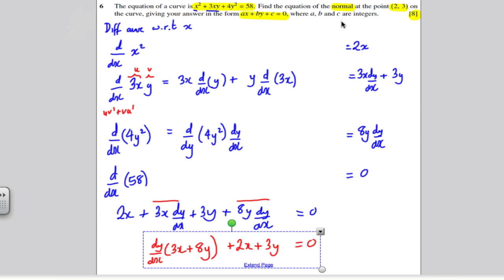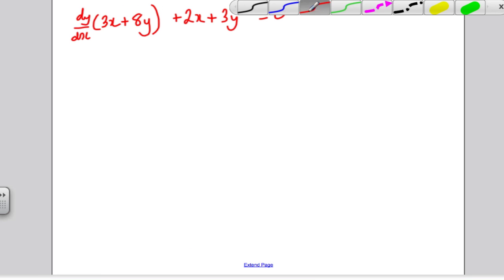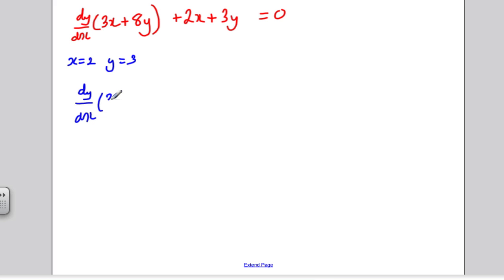I want to work out the gradient of the normal at the point (2, 3). So what I might do at this very point here, I might put in x is 2 and y is 3 right here. So that dy/dx, 3 times 2 is 6, 8 times 3 is 24, so 6 plus 24 is 30. 2 times 2 is 4, 3 times 3 is 9, so 4 plus 9 is 13, equals 0.